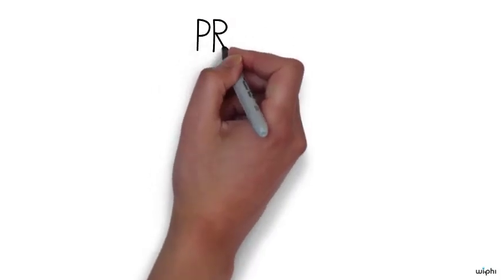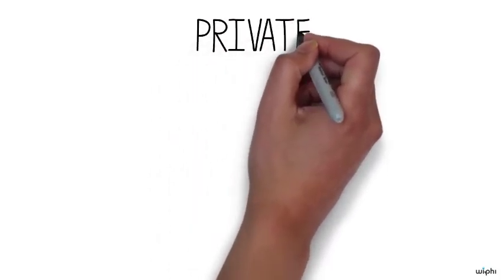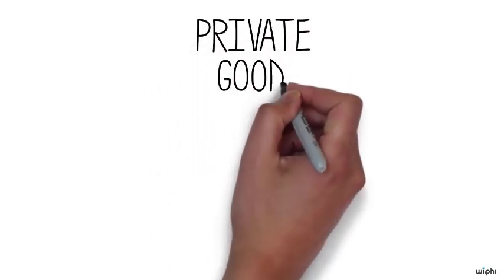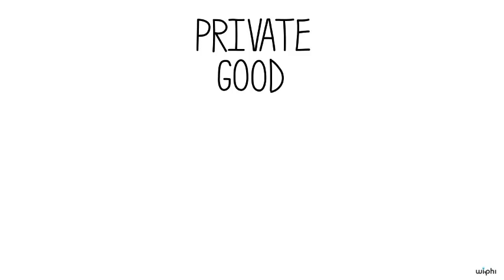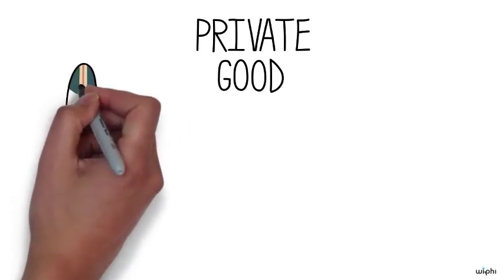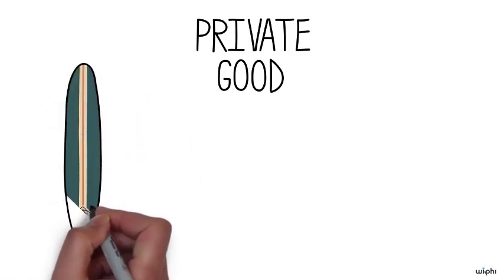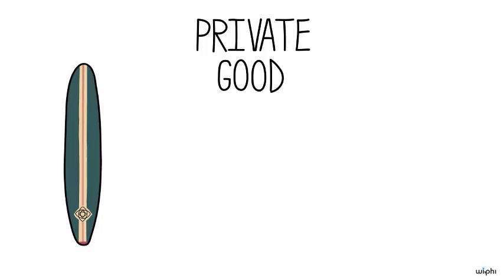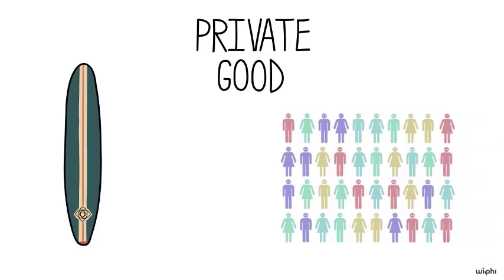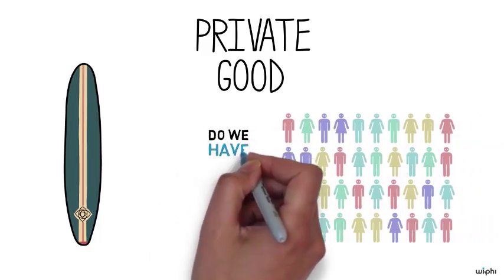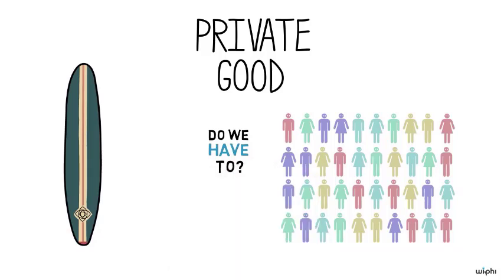Ordinary goods that we purchase in a market are private in the sense that once we own them, we can do what we please with them within the limits of the law. For example, when I buy a surfboard, I could choose to ride it, keep it stored in my closet, or sell it to the highest bidder. But since public goods are available for everyone to consume, it is difficult to get people to voluntarily provide them, or conserve them, once they've been provided.